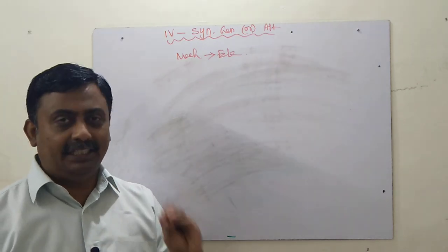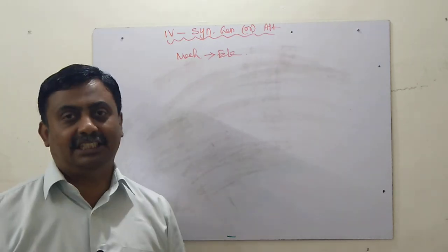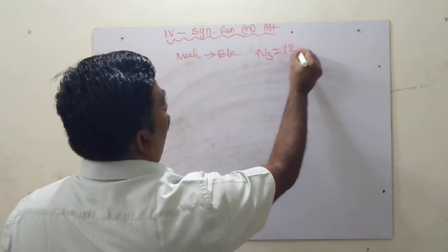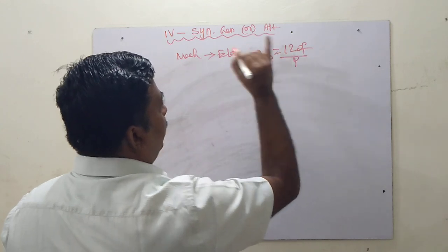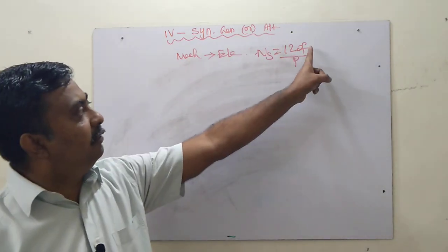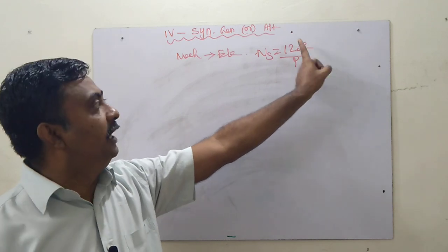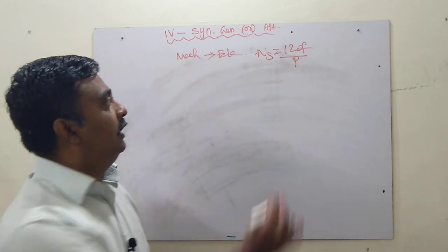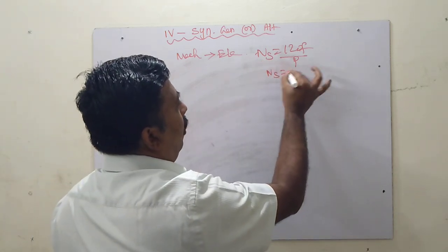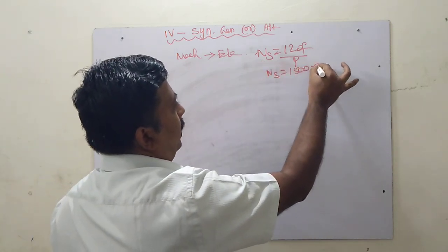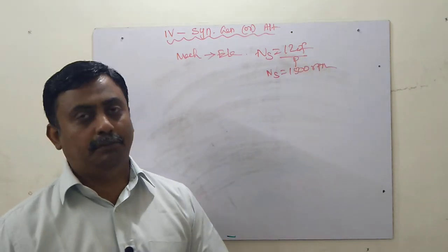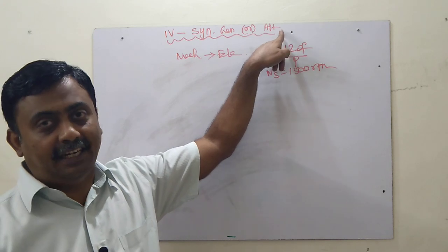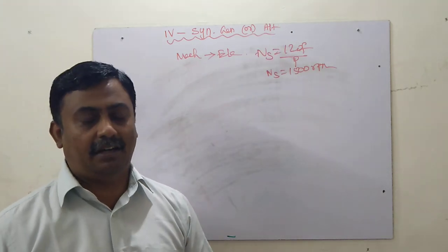What does 'synchronous' mean? It means the machine will run only at synchronous speed and at no other speed. The synchronous speed formula is Ns = 120f / P. In India, the frequency is 50 Hz. For example, a four-pole machine will always run at 1500 RPM and no other speed. That is why it is called a synchronous generator, also known as an AC generator or alternator.